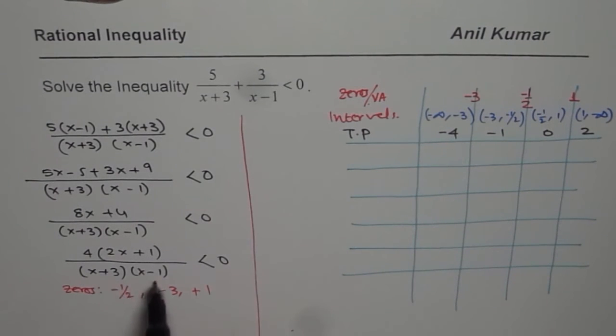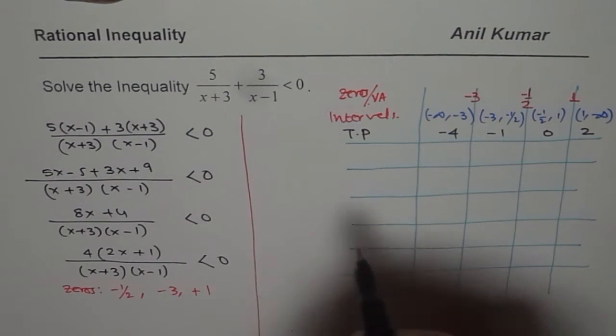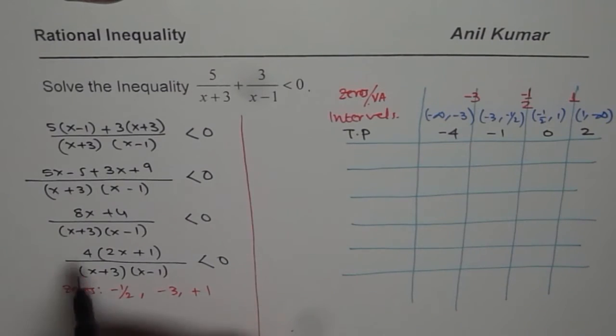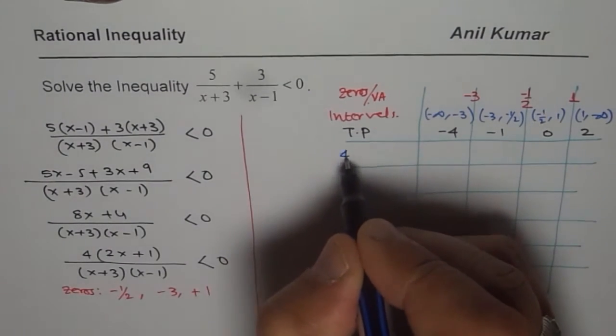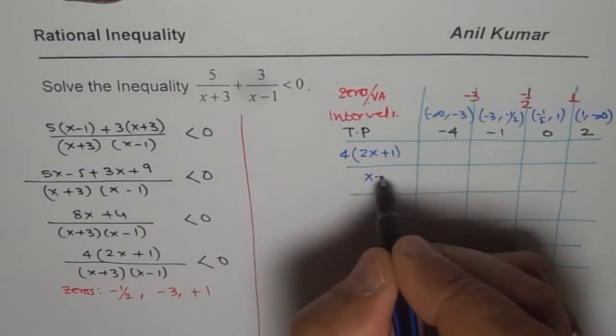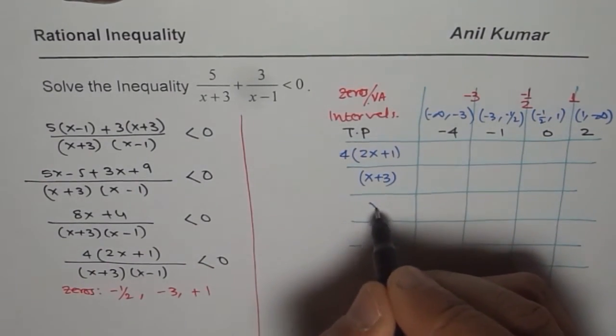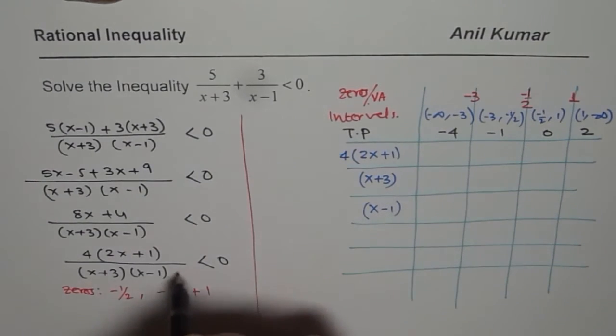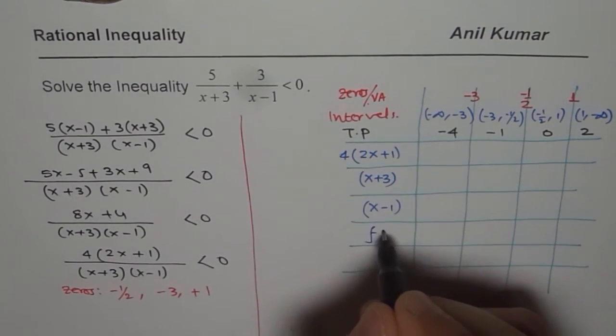We are trying to analyze these four factors. So let us write them down one by one. The first factor is, include constant also, 2x plus 1. The second one is x plus 3 and then we have x minus 1. Let us call this all a function.